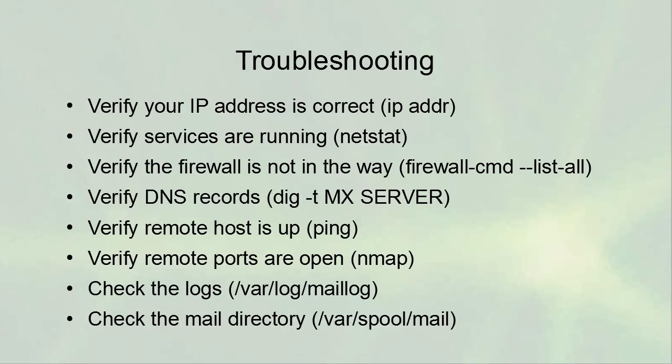When troubleshooting mail issues, verify your IP address is correct, confirm the mail service is running, check that the firewall isn't blocking traffic, and verify DNS records are in place. Make sure the remote host is up — you can ping it — and use nmap to confirm port 25 is open on the remote machine. Also check /var/log/mail.log for detailed error information and inspect the mail directory to see if mail is being received.